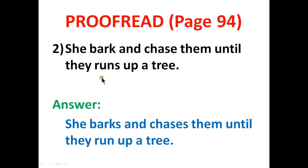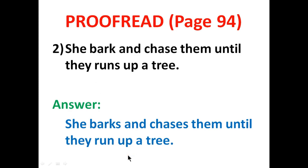Number two: 'She barks and chase them until they runs up a tree.' In this sentence there are three mistakes about verbs. Along with 'she,' there will be S or ES in the verbs. And if the subject is 'they,' there will be no S or ES. The correct answer is: She barks and chases them until they run up a tree.